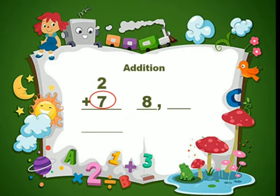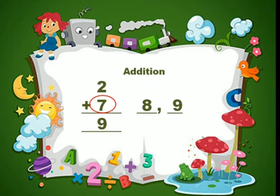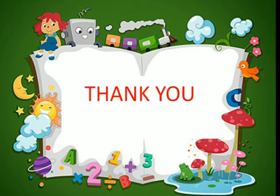After 7, count: 8, 9. The answer is 9. So 2 plus 7 equals 9. Did all of you understand, children? Thank you, children.